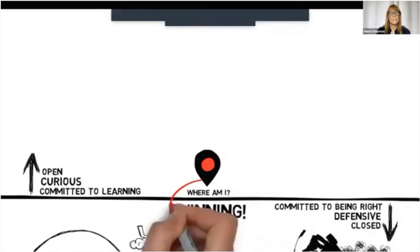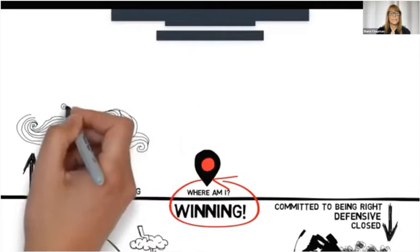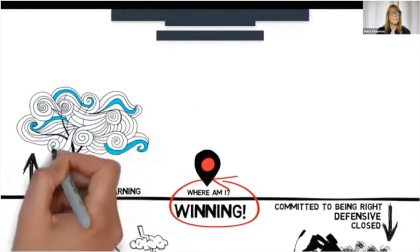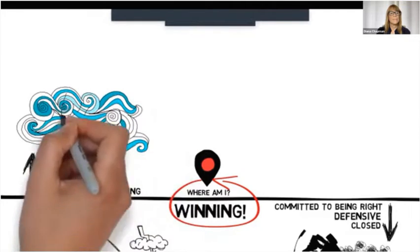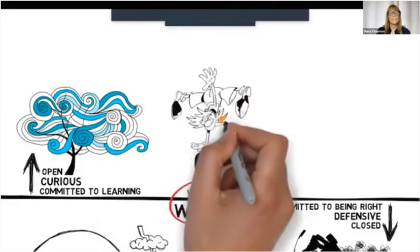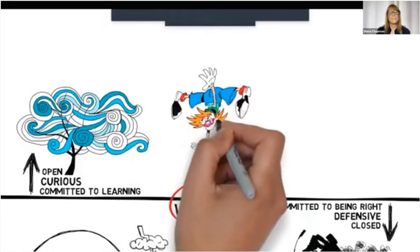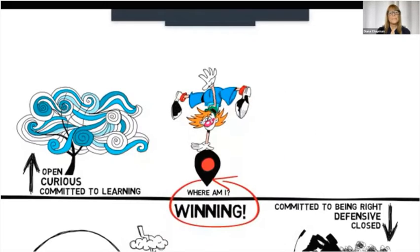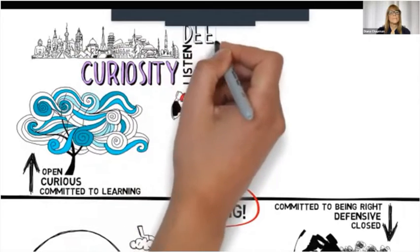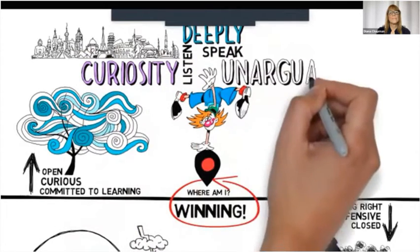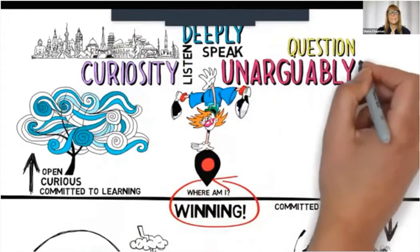When people are above the line, they believe that learning and growing are more important than being right. They believe that all people and circumstances are their allies here for their growth. They believe that from a distance, almost everything is funny. People above the line live in curiosity, listen deeply, speak unarguably, question all their beliefs, and live a life of play.